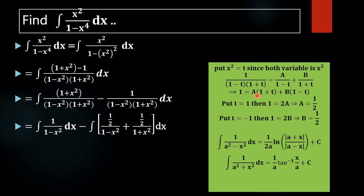Now for finding the value of A and B, put t equal to 1. If t equals 1, then the B term becomes 0, giving us 1 equal to 2A, so A equals one half. Again, if we put t equal to minus 1, then the A term becomes 0 since 1 plus minus 1 equals 0. For B: 1 minus minus 1 equals 2, giving 1 equal to 2B, so B equals one half. Therefore A equals one half and B equals one half.